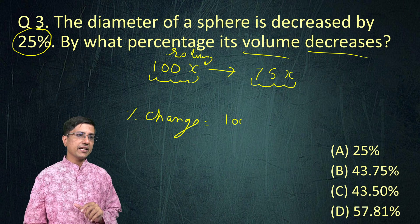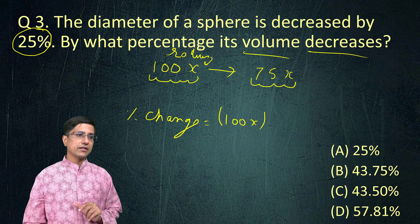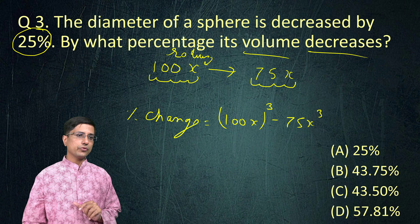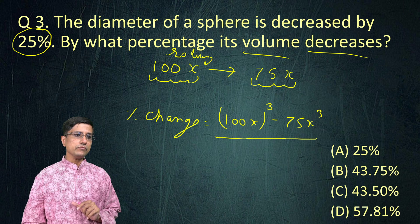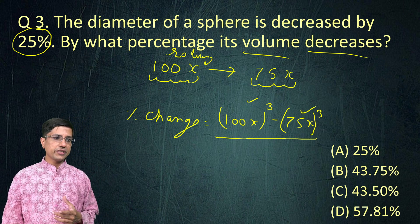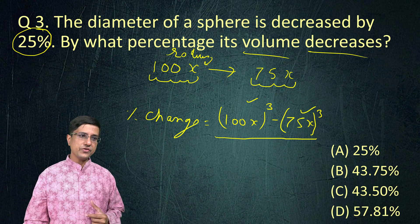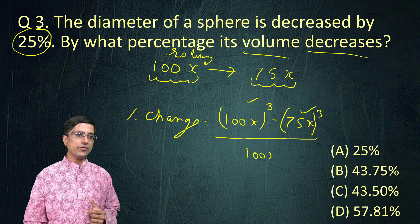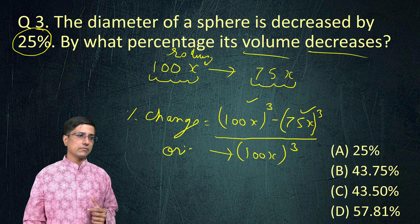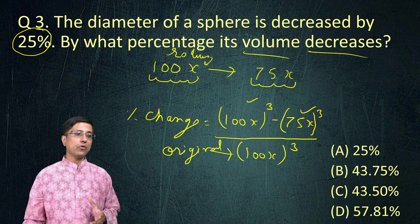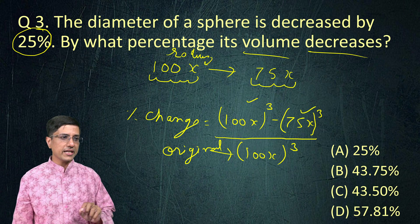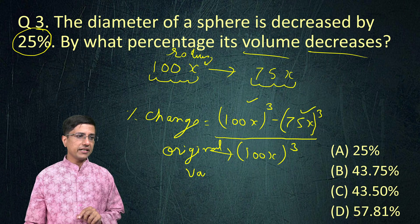And then we can simply say it would be (100x)³ - (75x)³. So initially it was 100x. The new is this much. So this is the difference between them. This is the change. And of course, whenever you calculate percentages, you always take the original value. You always calculate percentage change with respect to original value. So I keep original value right at the bottom.